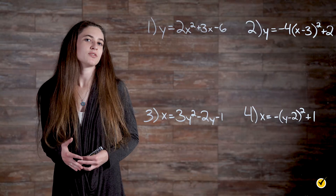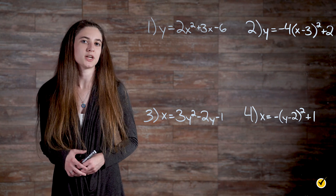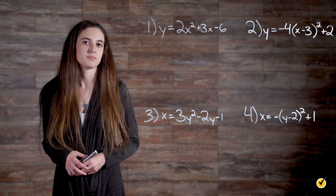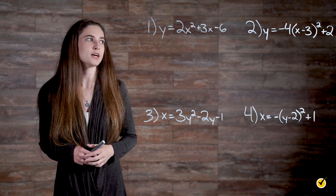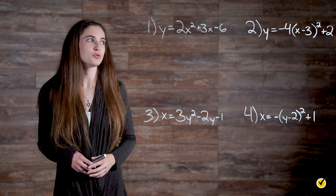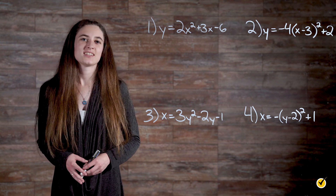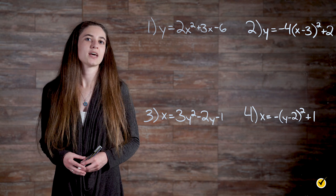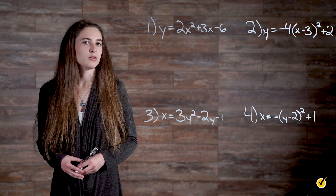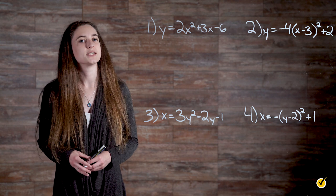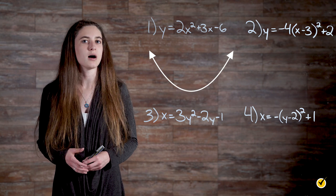To put all of this information together, let's look at a few examples of quadratic equations. First, we're going to look at y equals 2x squared plus 3x minus 6. This is a standard form quadratic equation with the x variable squared and a equals 2. Because a is greater than 0, the parabola will open up.